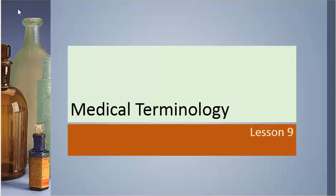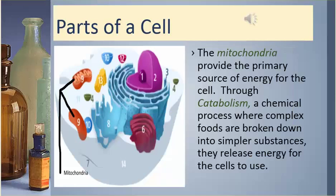Medical Terminology, Lesson 9: Parts of a cell. The mitochondria provide the primary source of energy for the cell. Through catabolism, a chemical process where complex foods are broken down into simpler substances, they release energy for the cells to use.